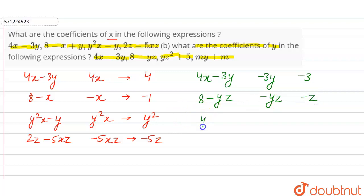Now the third expression is yz²+5. So term which has y is yz². And the coefficient will be z². Last part is my+m. So the term which has y is my and the coefficient will be m.